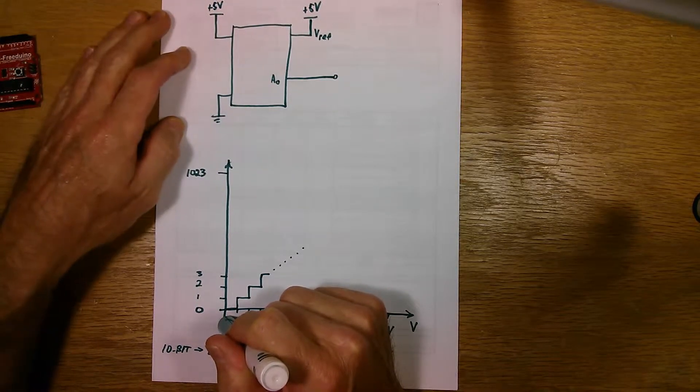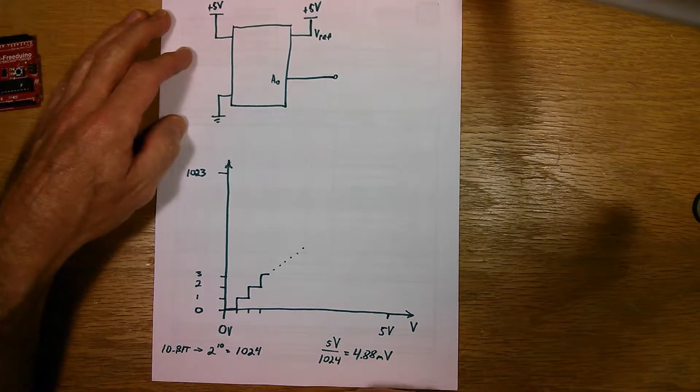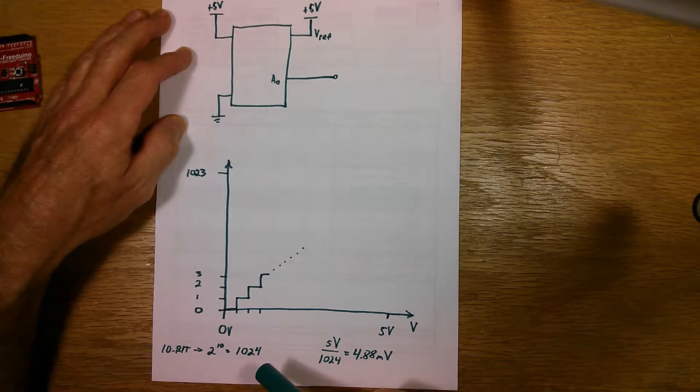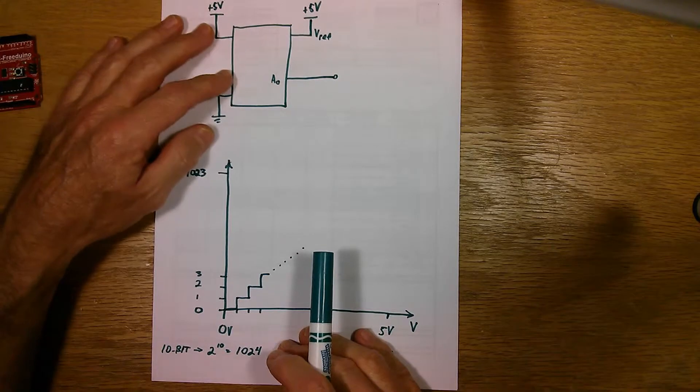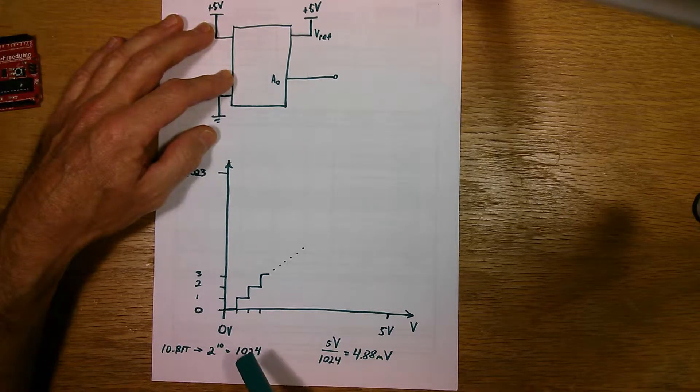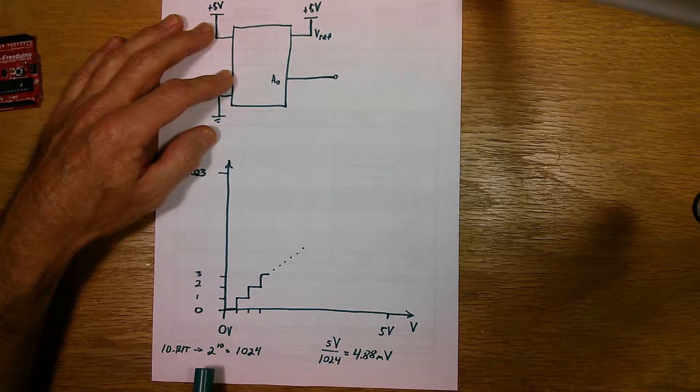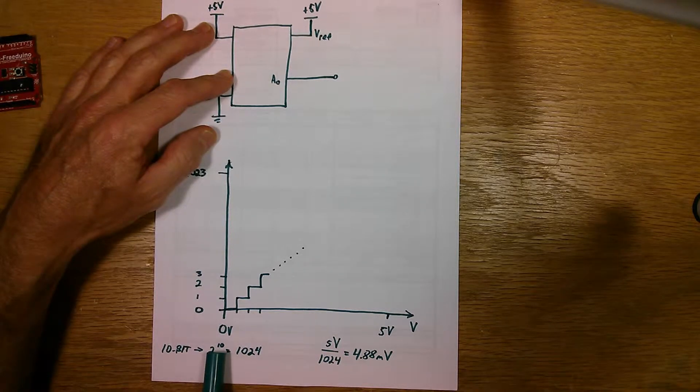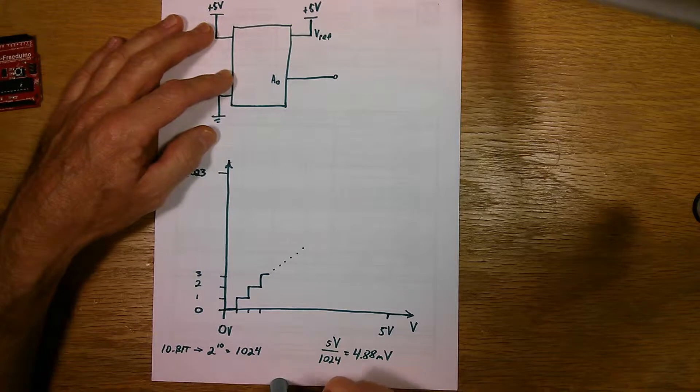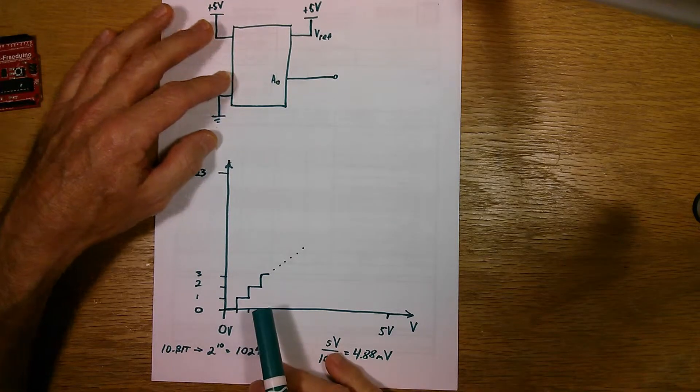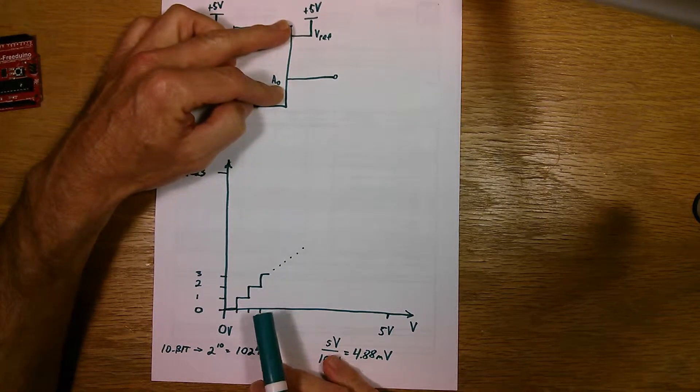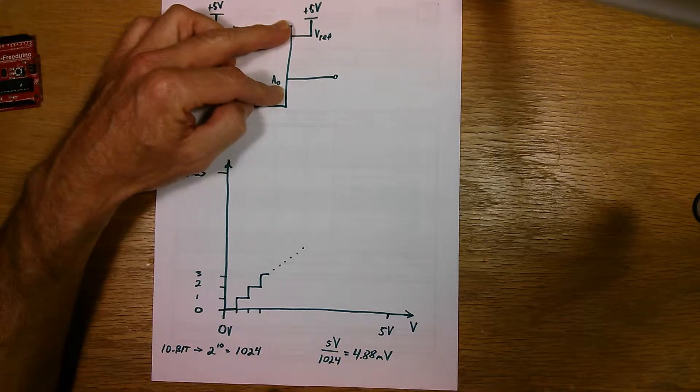And in the Arduino, in the ATmega328 microprocessor or microcontroller, it's what they call a 10-bit analog to digital converter. And what that means is 10 bits, so that means two raised to the power of 10. And that gives you 1024 if you do the math. And what that means is that it will break up this ratio or this range of voltage between zero and five volts into 1024 discrete steps.